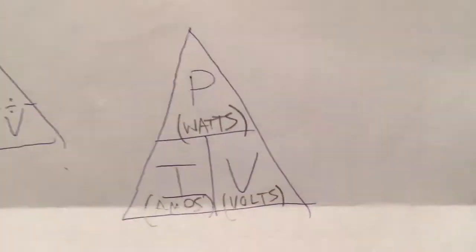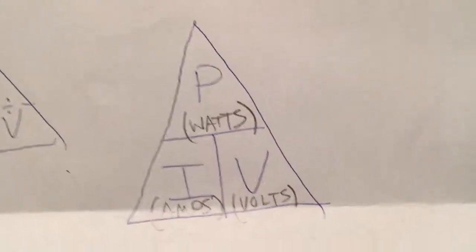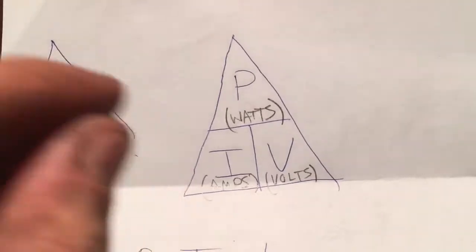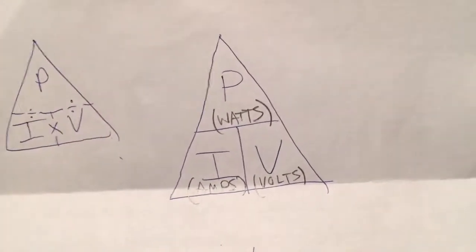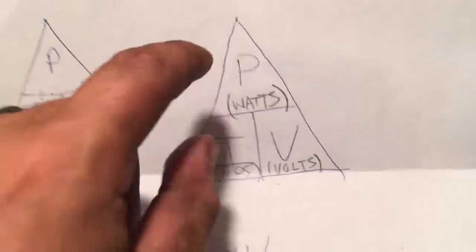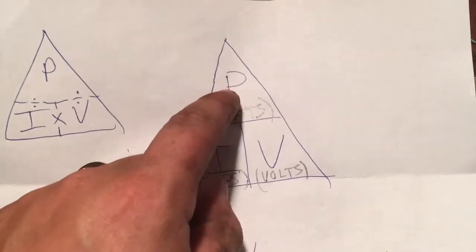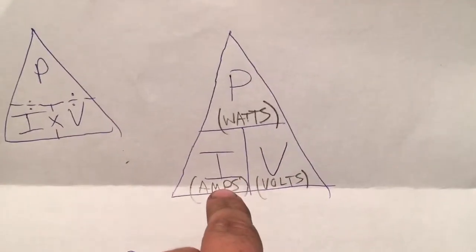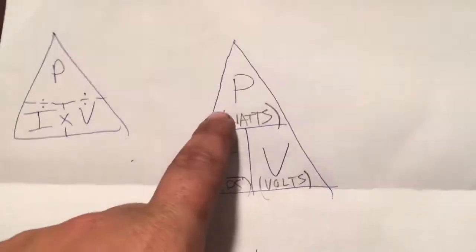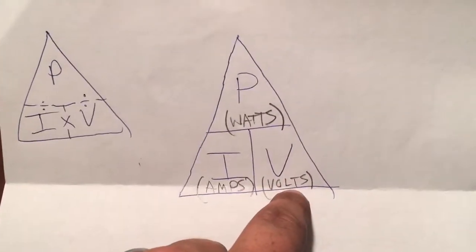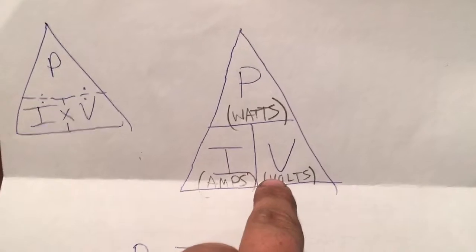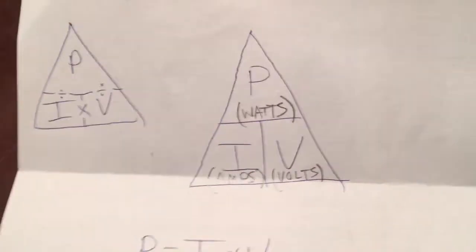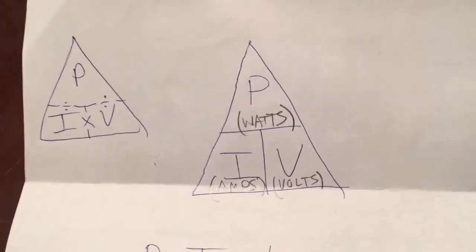Fortunately, everything is proportionate to each other. Amps, volts, and watts are all proportionate. What I mean by that is you can either multiply or divide and figure out something. So if you have the watts — which is P for power — and the volts, you can find out the amperage. If you only have the amps and watts, you can find out the volts. Or if you have only the amps and volts, you can figure out the watts.